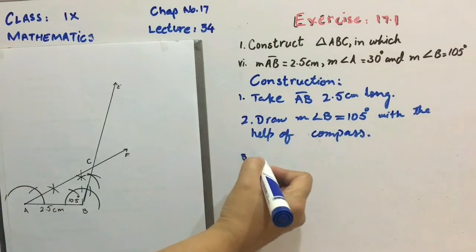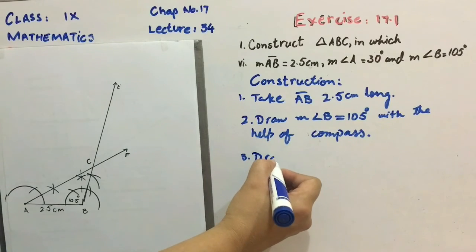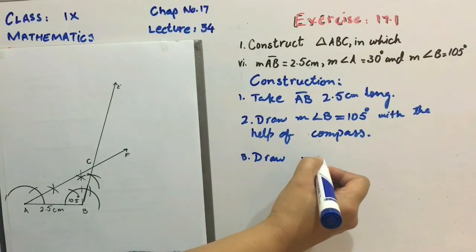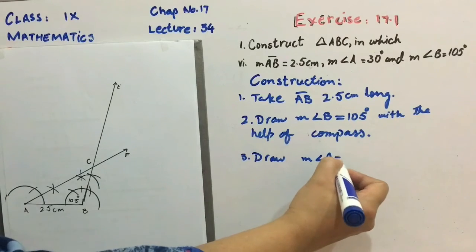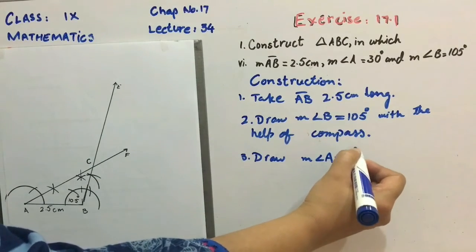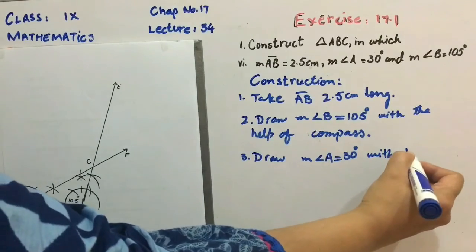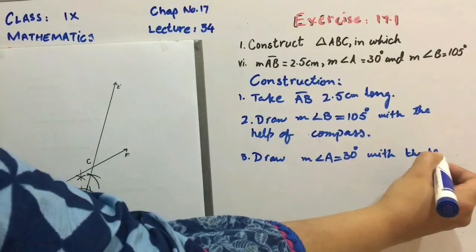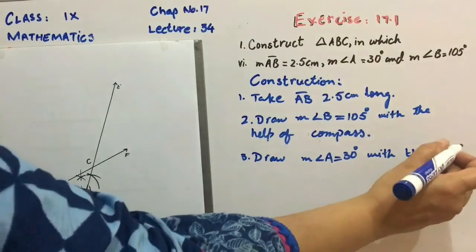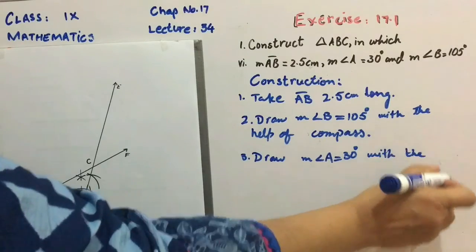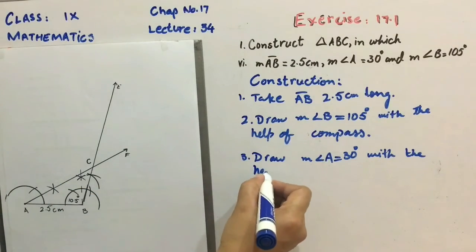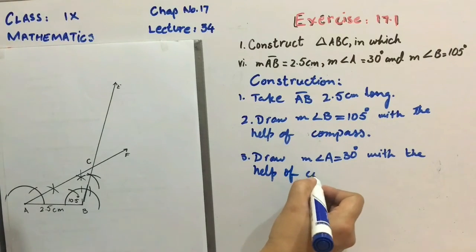Now draw step number 3. Draw measurement of angle A is equal to 30 degree with the help of compass.